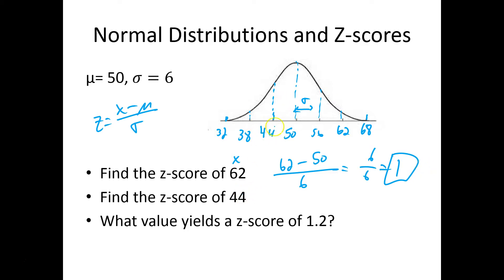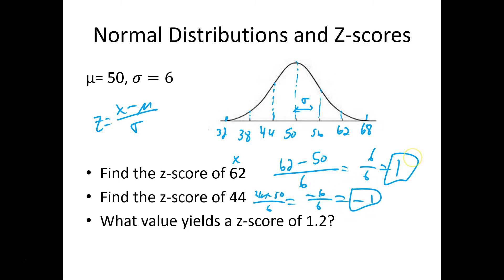For 44, my guess is it's going to be negative 1. Let's try it: 44 minus 50 over 6 is negative 6 over 6, which is indeed negative 1. So that z-score is negative 1.